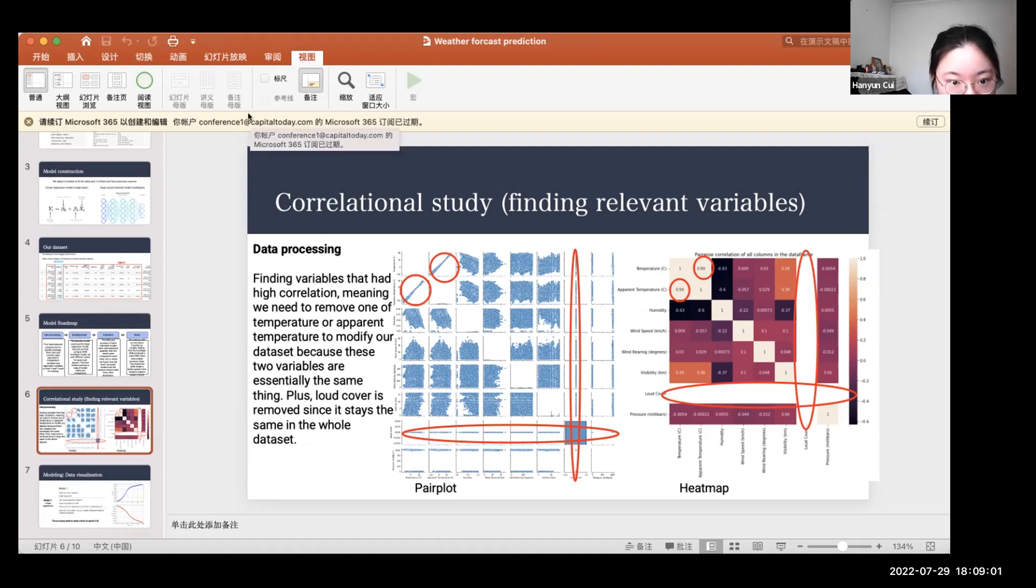Because these two variables are essentially the same thing. And it can be observed from the plots that the cloud cover stays constant throughout the whole dataset, so it needs to be removed.